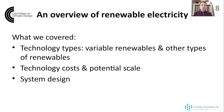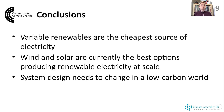Moving on to slide eight to wrap up - a recap of what we've covered today. We've looked at different technology types: variable renewables such as wind and solar, as well as other types of renewables. We've looked at costs and potential scale of these technologies, and how system design might need to change in the low carbon world. And lastly, the key takeaways: variable renewables are the cheapest source of electricity in the UK; wind and solar are currently the best options to produce renewable electricity at scale; and system design needs to change, but this is already well underway in the UK and around the world. Thank you very much.